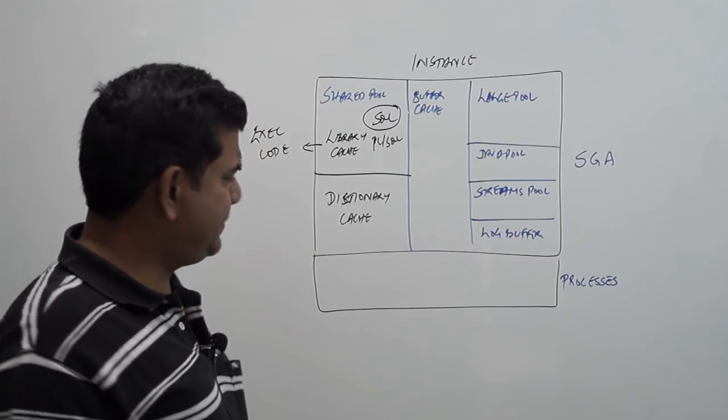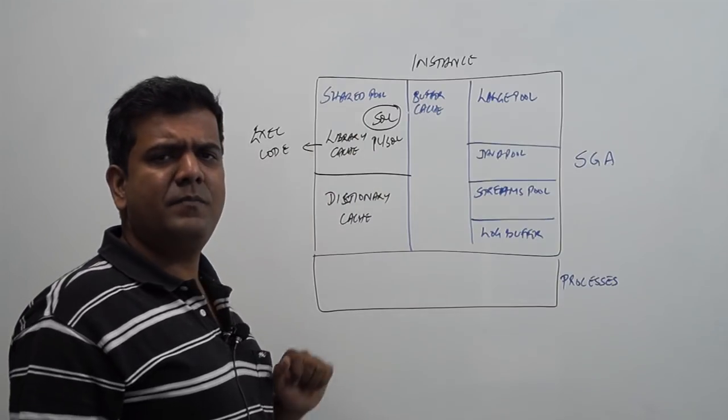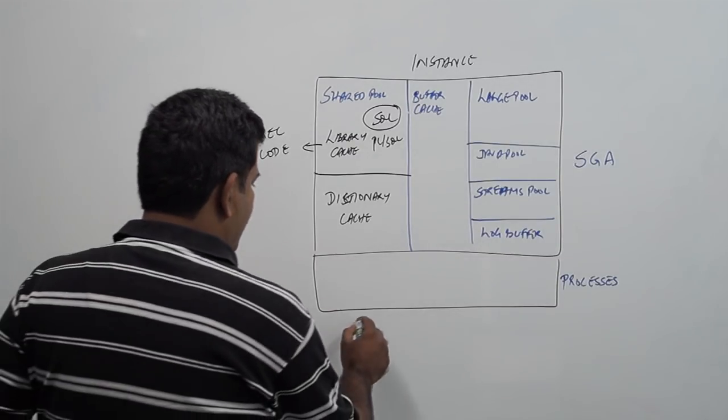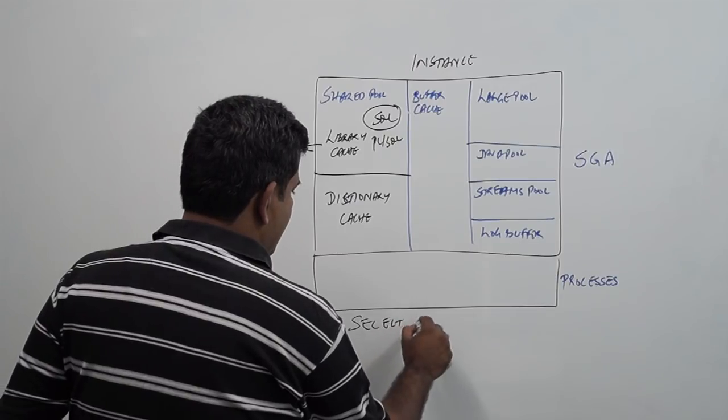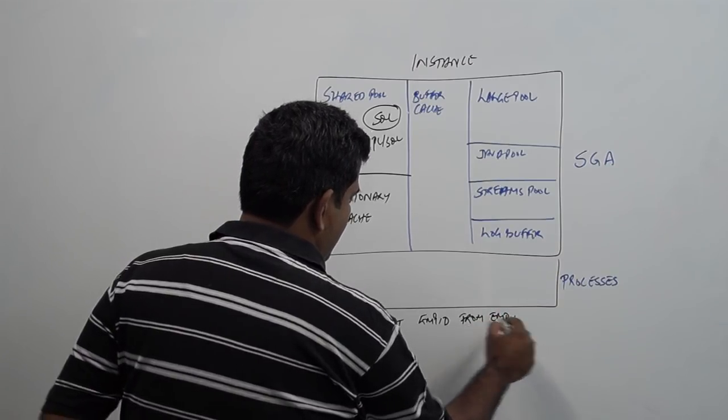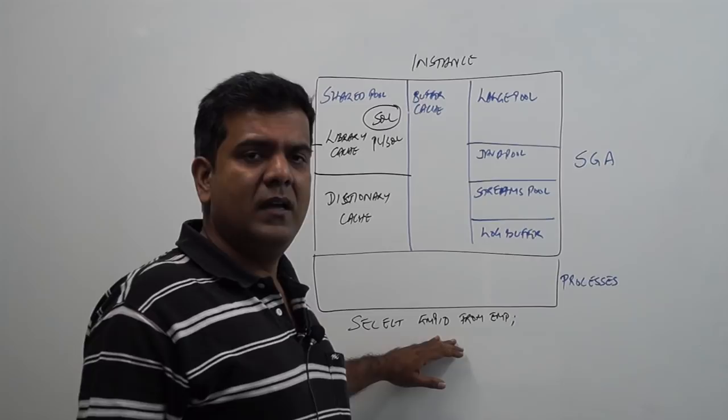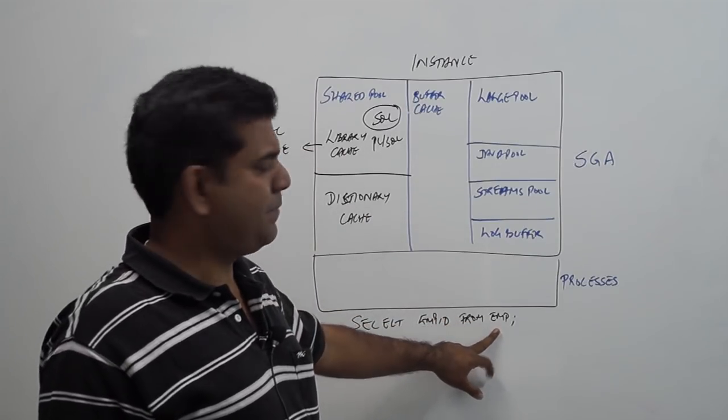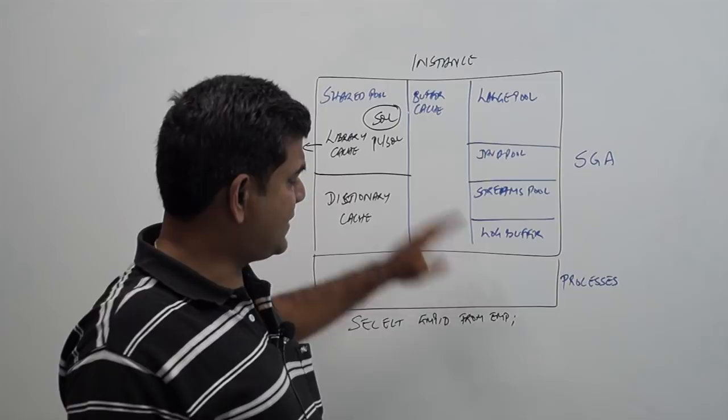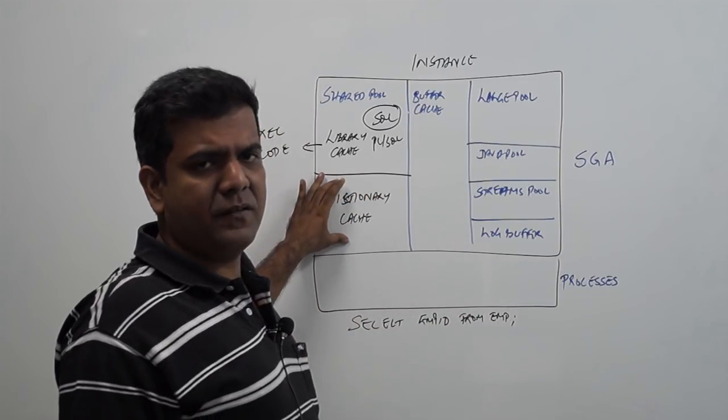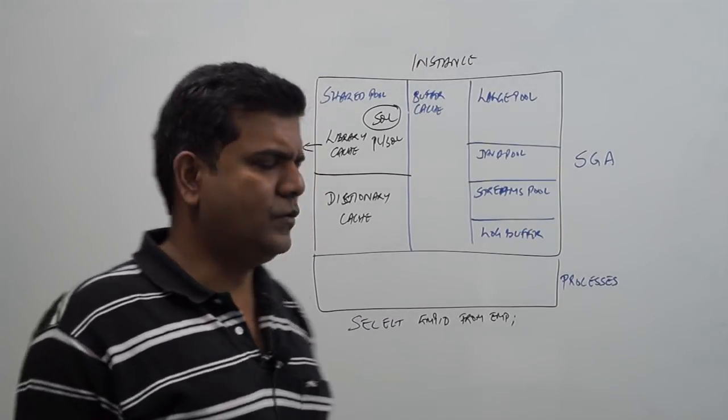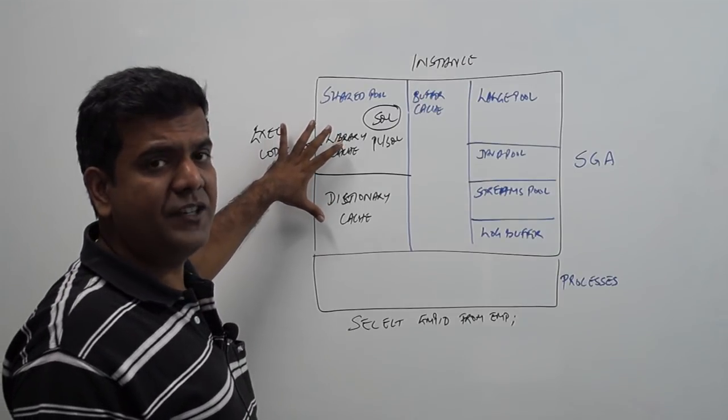Then, coming to dictionary cache. When a SQL statement is being parsed, it needs to know whether an object of that sort exists. For example, if you made a query, select EMP ID from EMP, which is a query, it has to first validate whether there is a table by name EMP that is available, whether there is a column EMP ID within the EMP table, whether the user who is firing the query has access to that, all that it looks up into the dictionary cache before the statement can be parsed and executed by the user. So, that is the primary content of the shared pool.